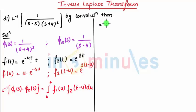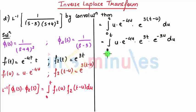Further I can say 0 to t what is my f 1 of u that is u e raised to minus 4u, what is f 2 of t minus u is e raised to 3t minus u du which changes to 0 to t u e raised to minus 4u e raised to 3t minus u du which now comes with e raised to 3t, 0 to t u into e raised to minus 7u du.